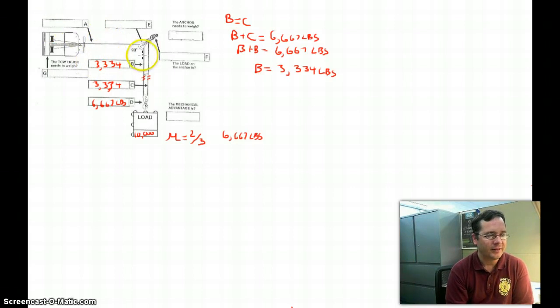Under that rule, then the tension in wire rope B has to be equivalent to the tension in wire rope A. So this has just got to be 3,334 pounds, just like it is everywhere else in the system.